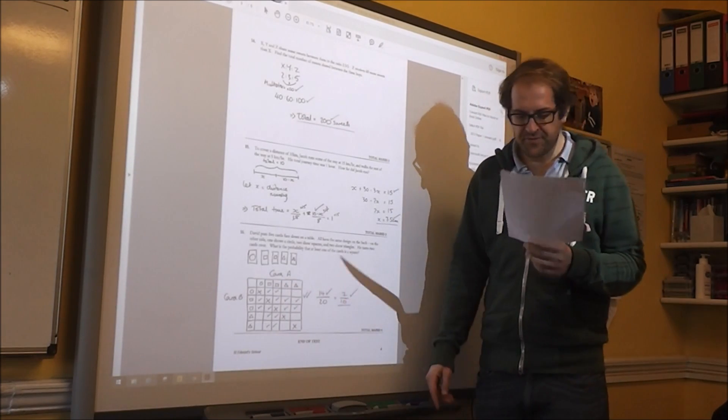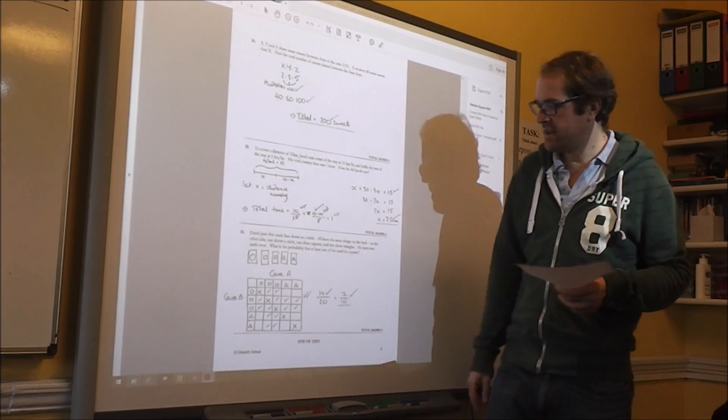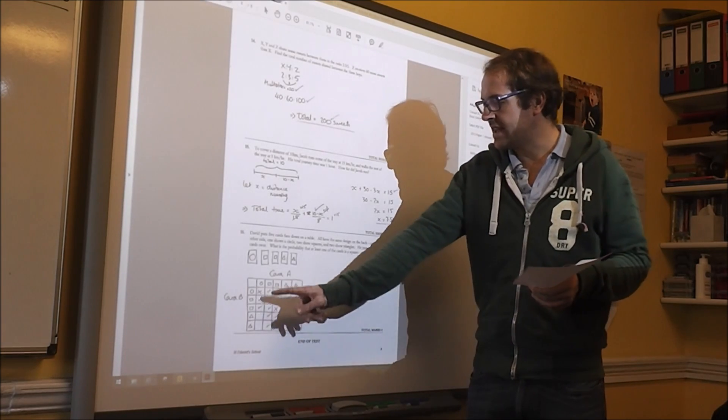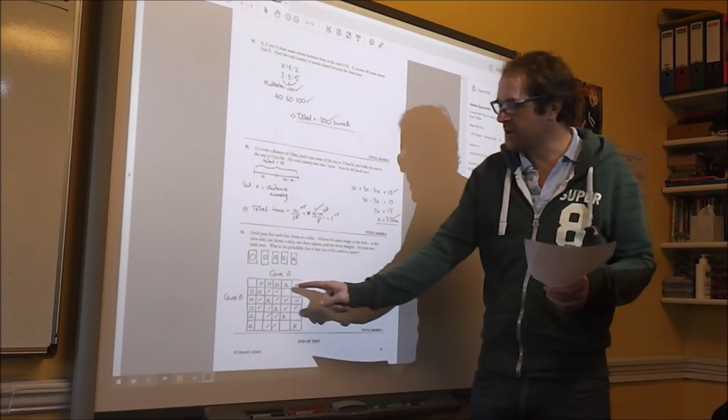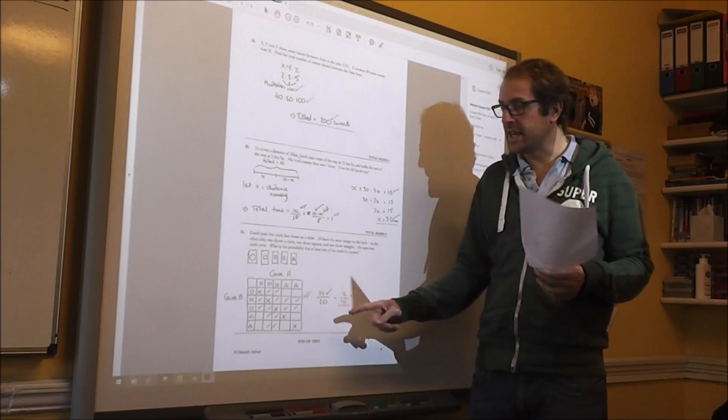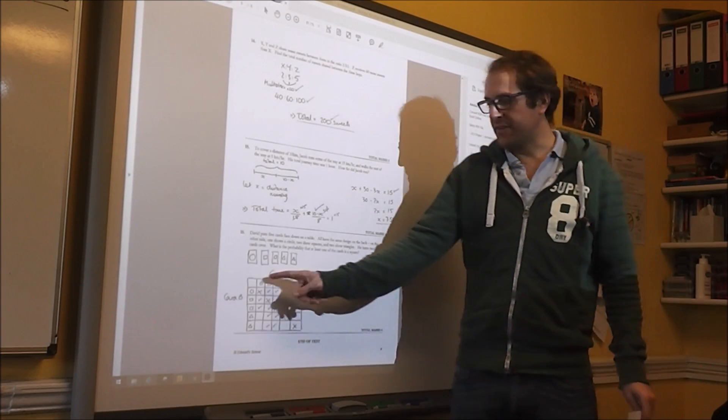And then the probability he gets at least one square, so there are squares, not very good drawing. I've ticked all the places where there's a square. I've worked out all the possible combinations, which is twenty. So it's fourteen out of twenty, which is seven tenths. Again, for four marks, it's well worth doing that.